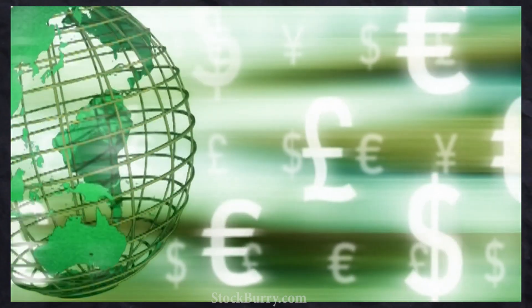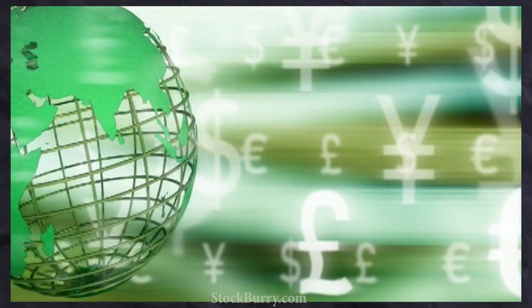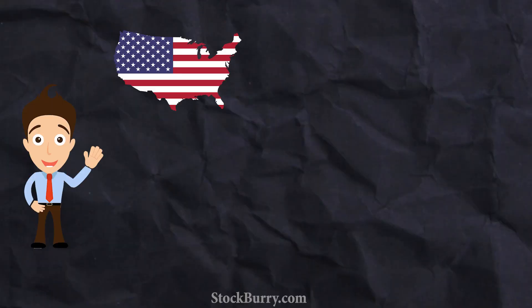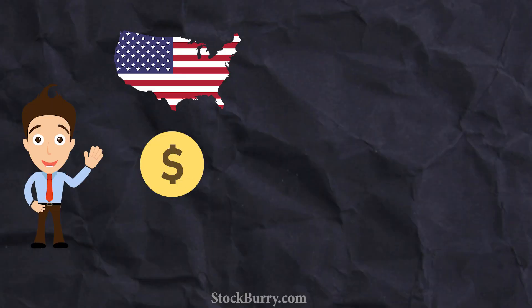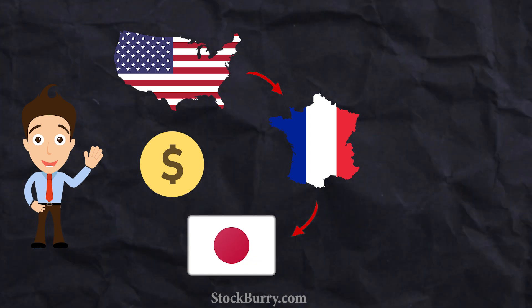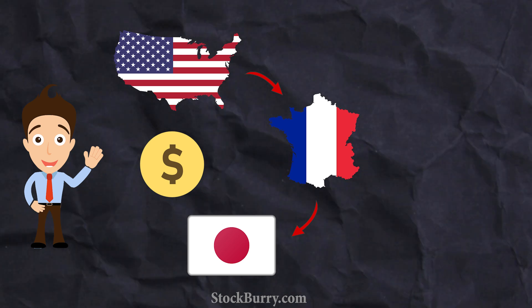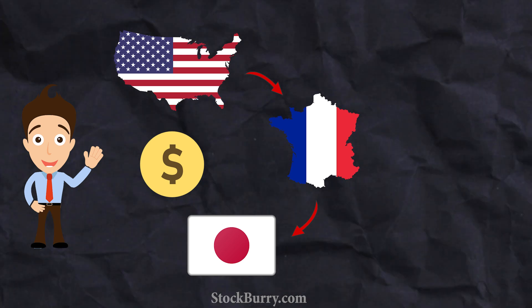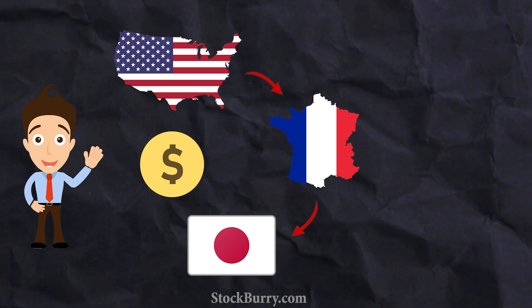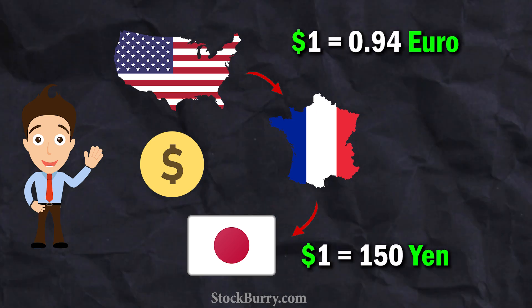To wrap up, currency values are shaped by the basic economics of supply and demand. Higher-demanded currencies have higher value, and most importantly, they are stable currencies, which gives a sense of security. Some countries peg their currencies to the US dollar for stability, while others use the Euro for easier travel and trade. That's why different currencies have different values.